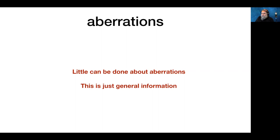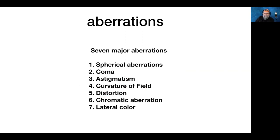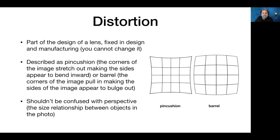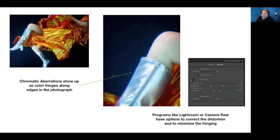Aberrations: lens designers work out formulas to balance and reduce them — there's usually nothing you can do about most of them, but some can be lessened by stopping down the lens. Distortion — pin cushion or barrel — can be corrected in post-processing in Lightroom or Photoshop Camera Raw. Chromatic aberrations show up as color fringes along the edges of lines in the photo, and there's a correction area for that in Camera Raw and Lightroom as well.